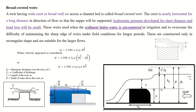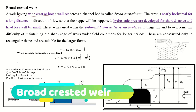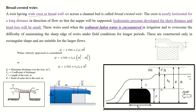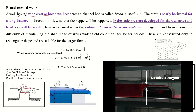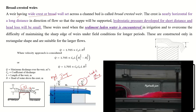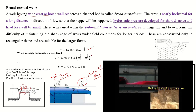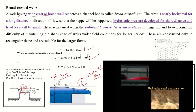The broad-crested weir has a large crest length or width. It is provided where sedimentation in the field creates problems, as it helps in creating hydrostatic pressure maintained over a short distance. In this condition, a hydraulic jump is created, creating critical velocity. The velocity approach is added to the broad-crested weir formula.